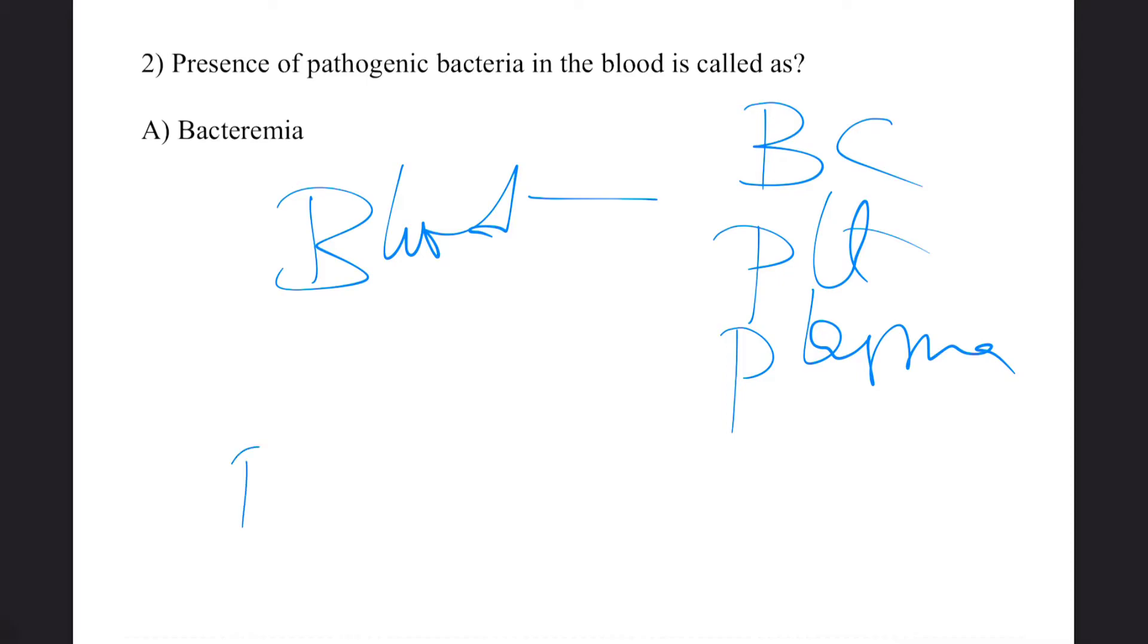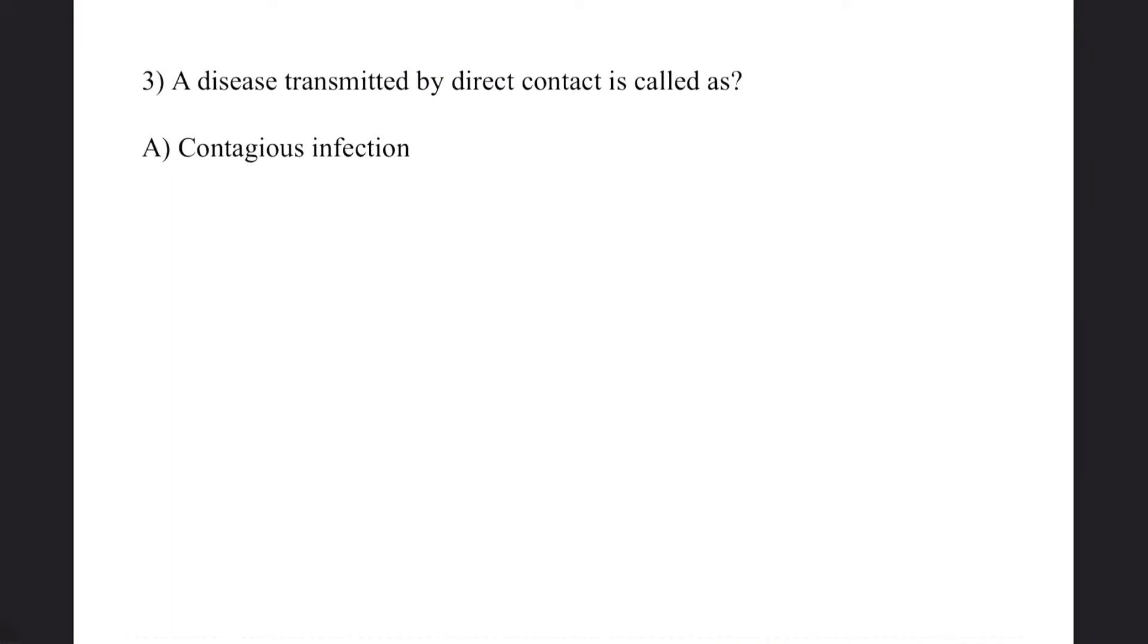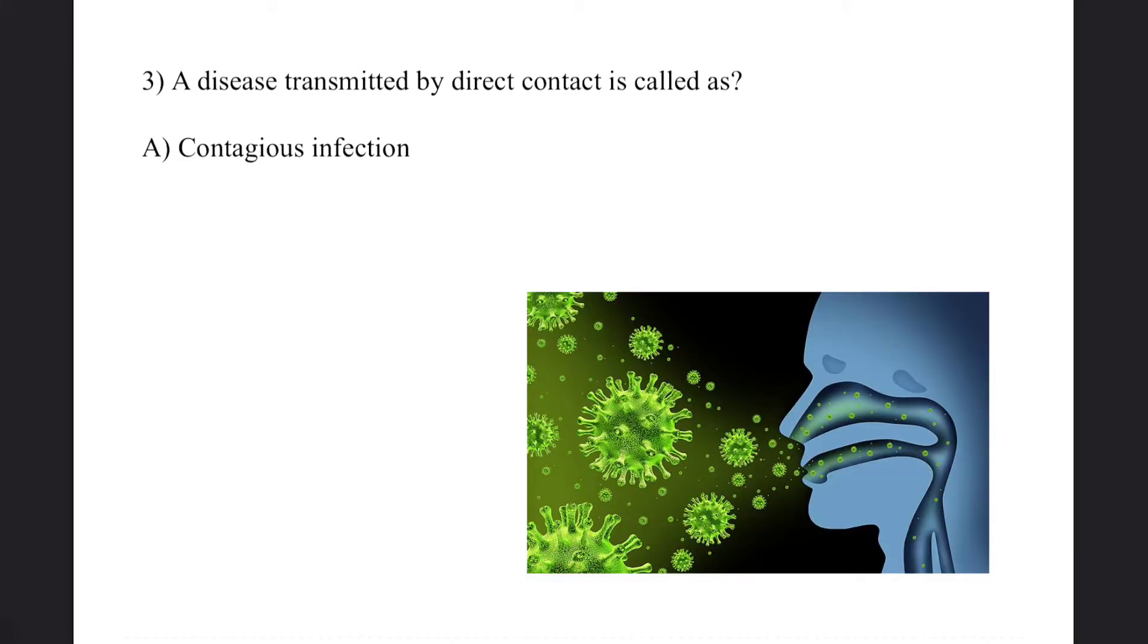These are the only components which should be present in the blood. If bacteria is present, it means the blood is infected with bacteria, and that infection is known as bacteremia. Third question: A disease transmitted by direct contact is called? Answer: contagious infection.